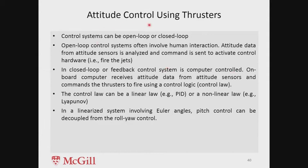The control systems for attitude control can be open loop or closed loop. Open loop control systems are not really accurate — you just give some command and they require human interaction. You have attitude sensor data, and then give a command to fire the jets in a certain sequence so that attitude changes in a particular manner, but there is no feedback in open loop control, so you cannot have very good control.